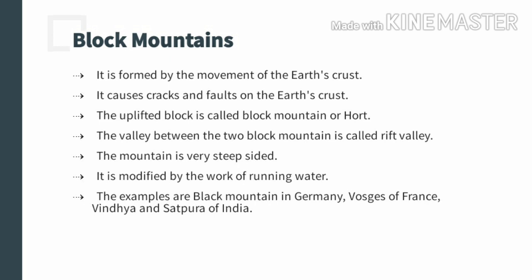Now we will deal with the block mountain. The block mountain is formed by the movement of the earth's crust — either because of tensional movement or compressional movement. These movements cause the formation of cracks and faults on the earth's surface, leading to the rise or subsidence of land above the surrounding area. When the land rises, a block mountain is formed. The block mountain is also known as a horst.